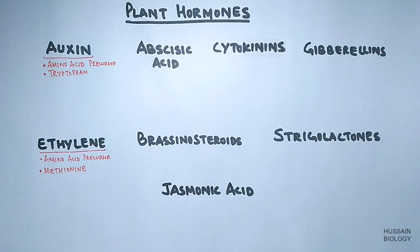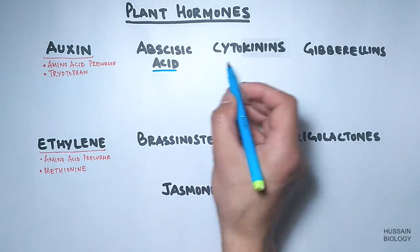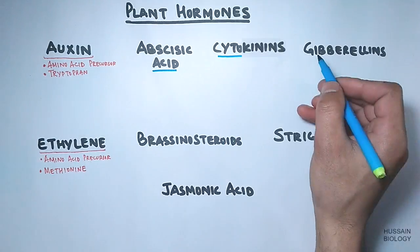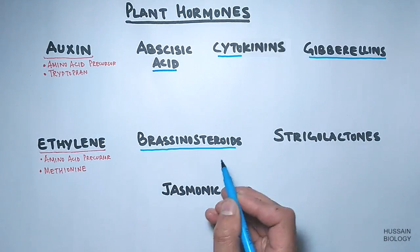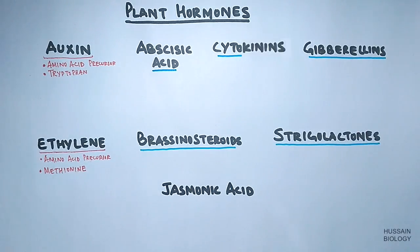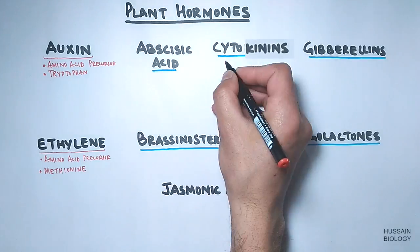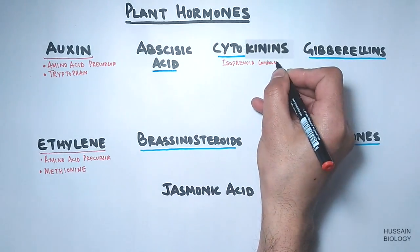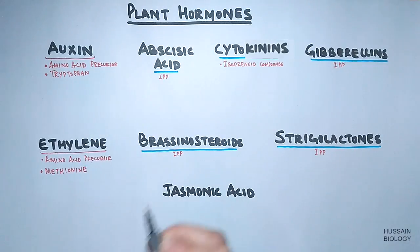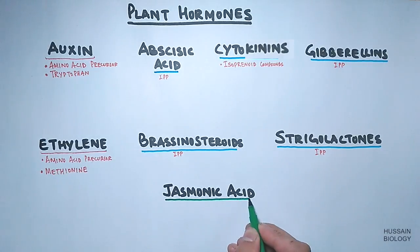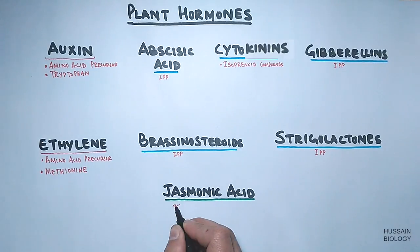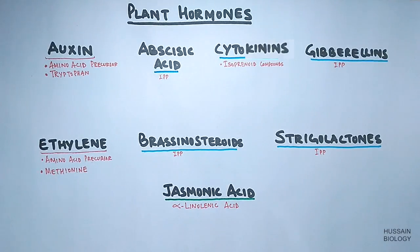Then we have other plant hormones: abscisic acid, cytokinins, gibberellins, brassinosteroids, and strigolactones. These five hormones have an isoprenoid compound precursor — that's IPP. And the last one, jasmonic acid, has an alpha-linolenic acid precursor.